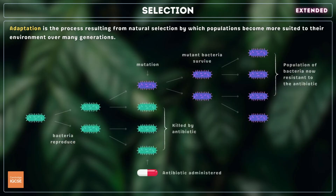The development of antibiotic-resistant strains of bacteria is an example of adaptation by natural selection. When exposed to an antibiotic, a bacterium will occasionally mutate and develop features that allow it to survive the drug. The mutant bacterium can then reproduce while others are killed off, leading to the build-up of a resistant population over time. As a result, the antibiotic eventually becomes ineffective due to the widespread presence of resistant bacteria.